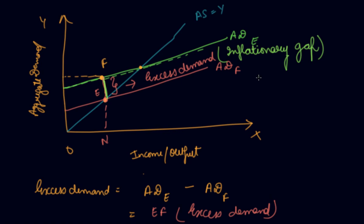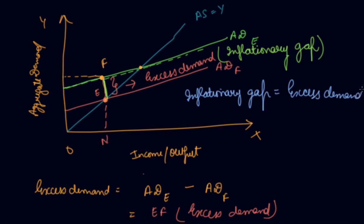The inflationary gap is the excess of aggregate demand over and above its level required to maintain full employment equilibrium in the economy. So your inflationary gap is equal to your excess demand, which is equal to aggregate demand at more than full employment level minus aggregate demand at full employment level. That gap EF is your inflationary gap — the prices in the economy have increased. This is the inflationary gap and excess demand in the economy.